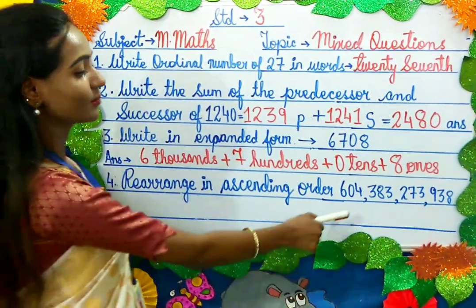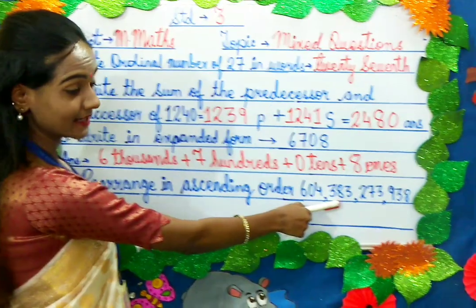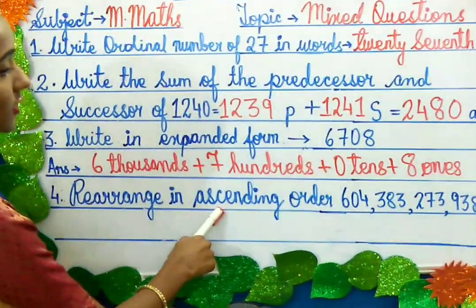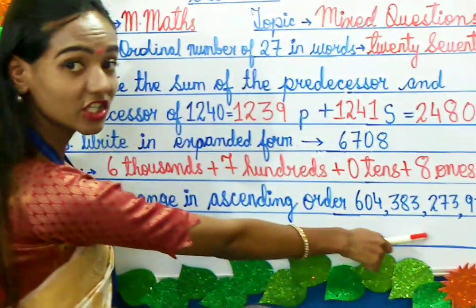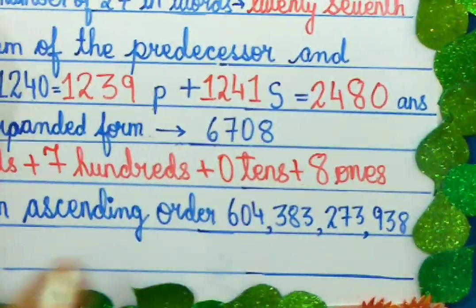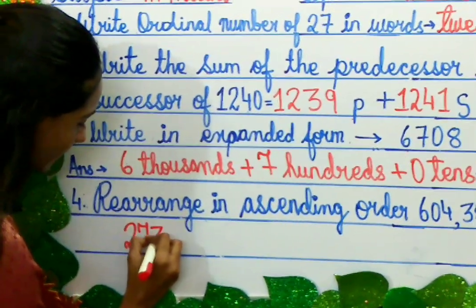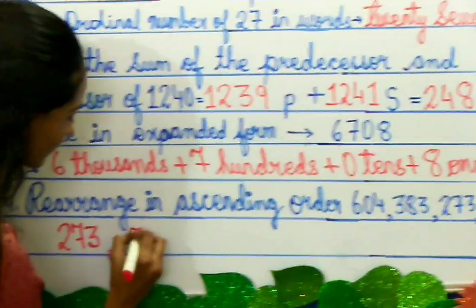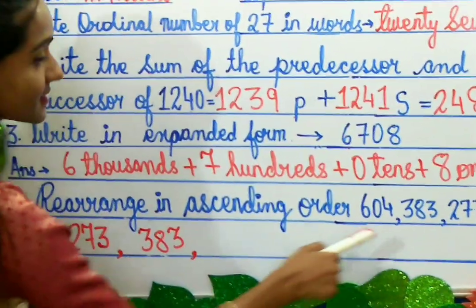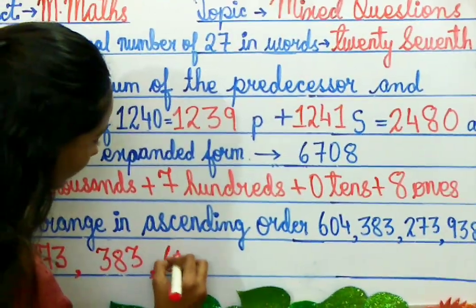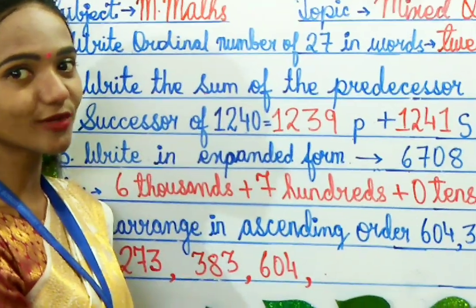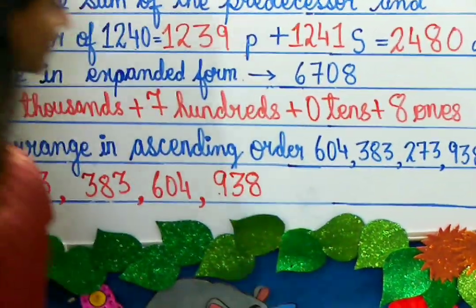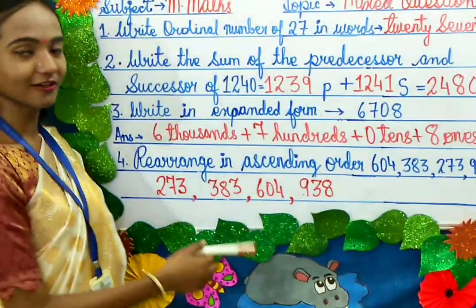As you can see, the numbers given are 604, 383, 273, and 938. For ascending order, we first write the smallest number — 273. After 273, the next larger number is 383, then 604, and the largest number is 938. So we have arranged the numbers in ascending order.